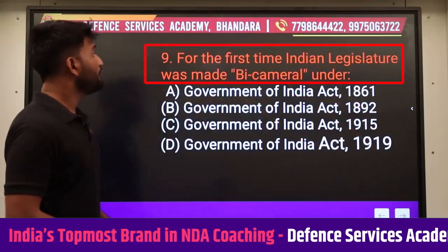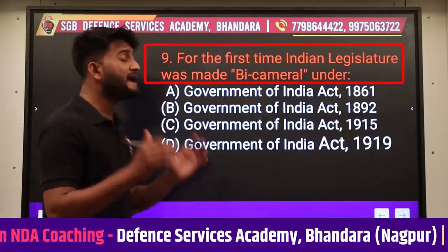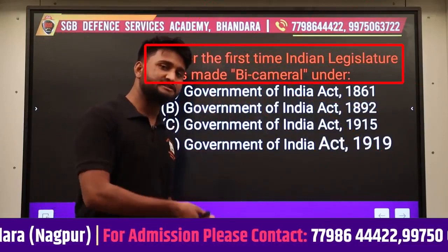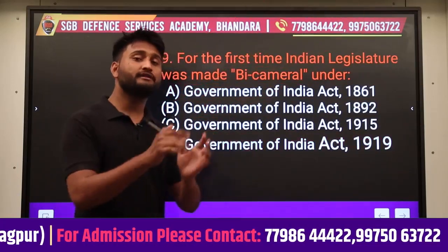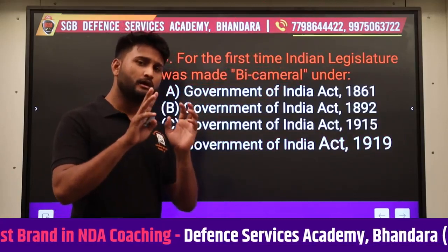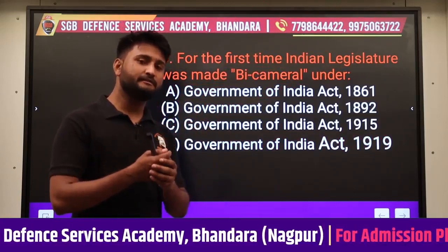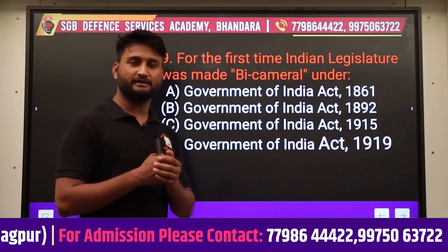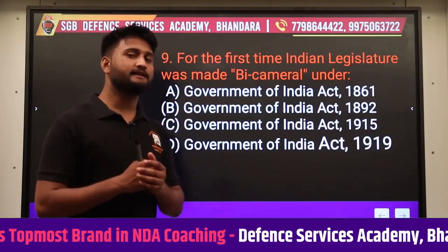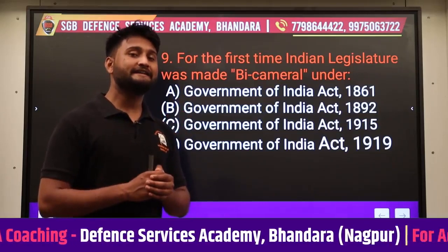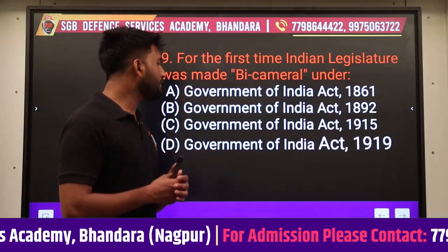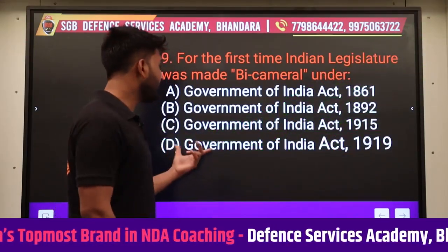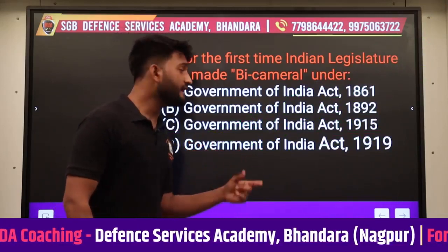Next question: For the first time Indian legislature was made bicameral - Central में राज्यसभा और लोकसभा, और State में विधान परिषद और विधानसभा - यह दो सदनों की legislative assembly होती है, इसको bicameral system कहा गया है। यह bicameral system भारत ने Government of India Act 1919 से उठाया था। Answer रहेगा D - Government of India Act 1919।